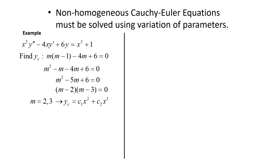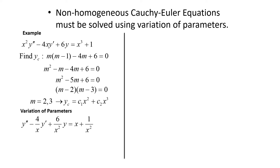To find a particular solution using variation of parameters, we first put the equation in standard form by dividing by x²: y'' - (4/x)y' + (6/x²)y = x + 1/x². We assume yp = u1 x² + u2 x³ and need to determine u1 and u2.